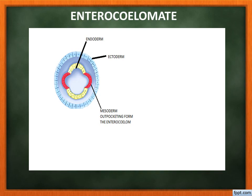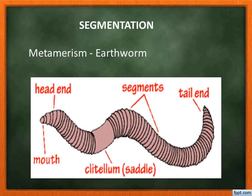Segmentation means the body is arranged into segments. In earthworms, the same segment size is repeated throughout the body — this is called metamerism. In cockroaches, the body is also made up of segments, but segment by segment the size may reduce, and various organs are present inside each segment.